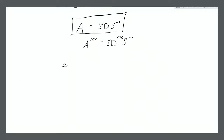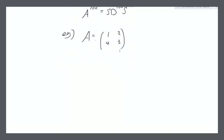Let's do an example. Let's say A is equal to [[1, 2],[4, 3]]. We want to find its eigenvalues and eigenvectors, so we want to solve the equation A times v equals lambda times v, where lambda is some constant and v is a vector.